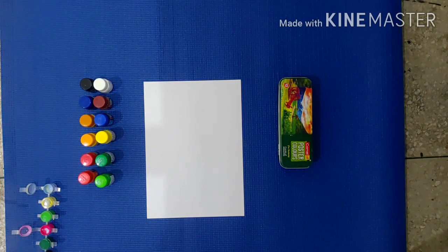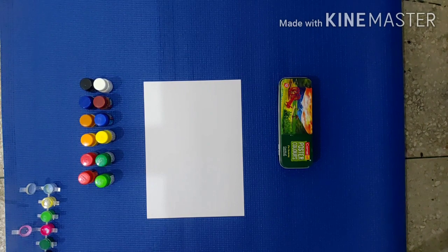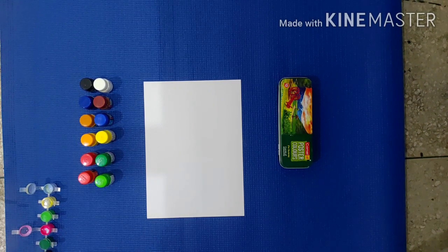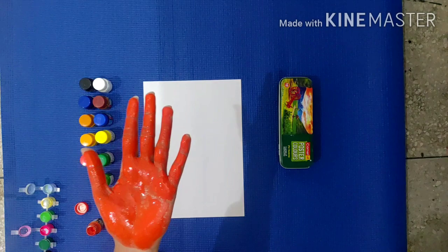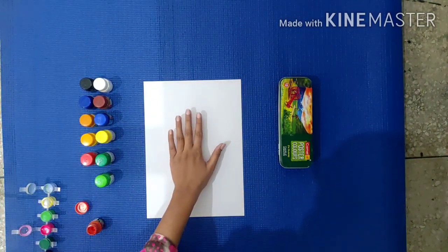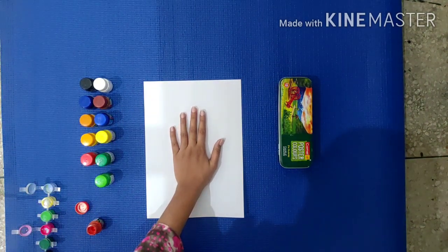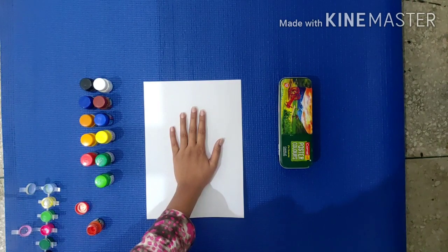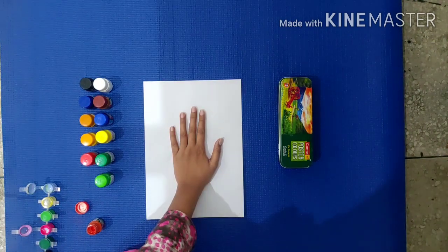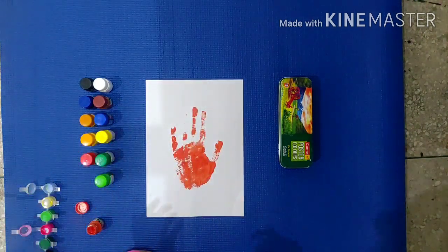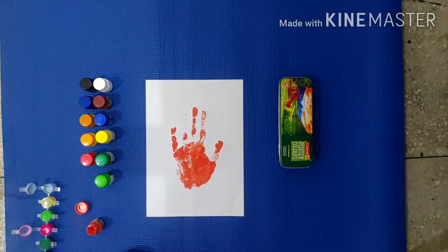Next we will make fish. For that you can take any color you want. Here I am taking orange color. Place it on the paper. Give it a finishing.